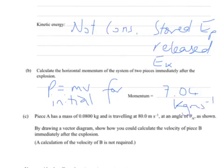Part C: piece A has a mass - see how I did that - and it's traveling at 80.0 meters per second at angle of theta A as shown. By drawing a vector diagram, show how you could calculate the velocity of piece B immediately after the explosion. A calculation of the velocity of piece B is not required.